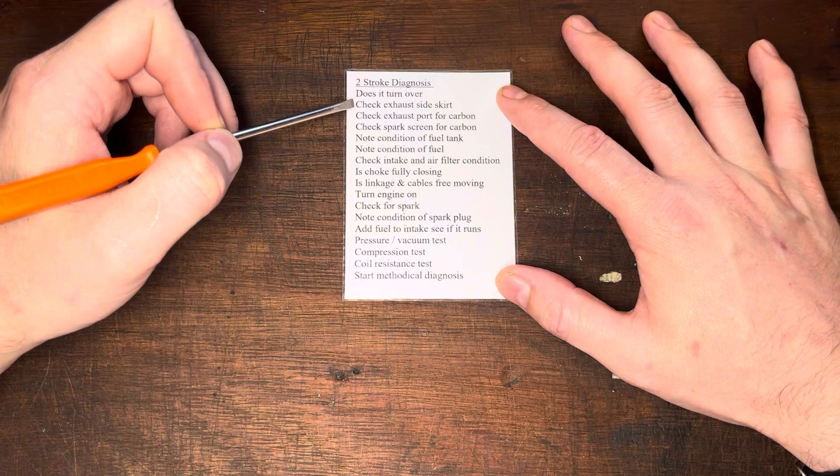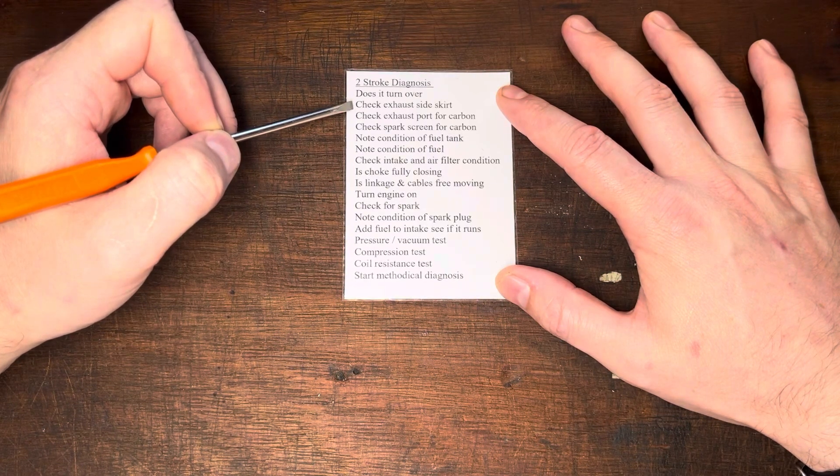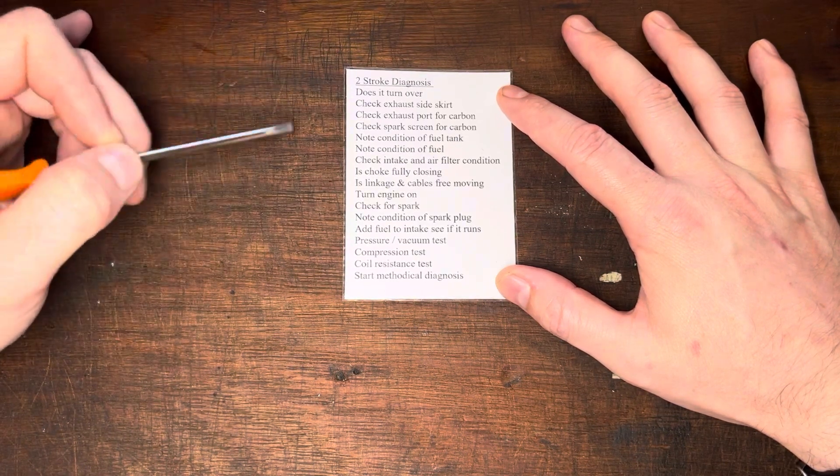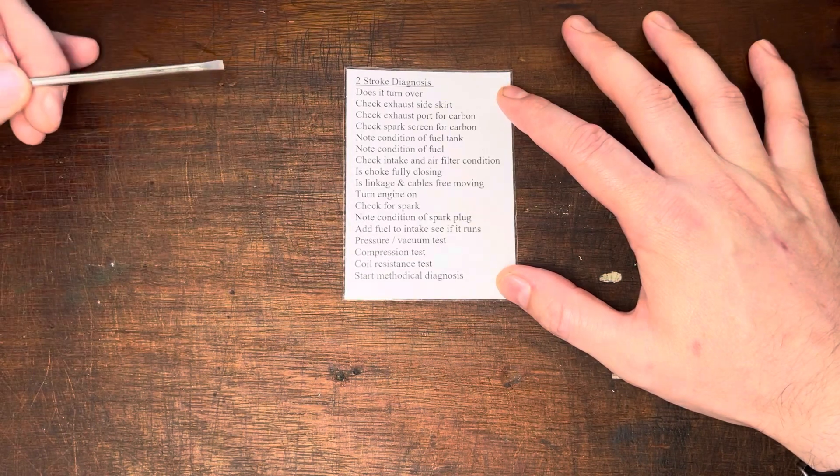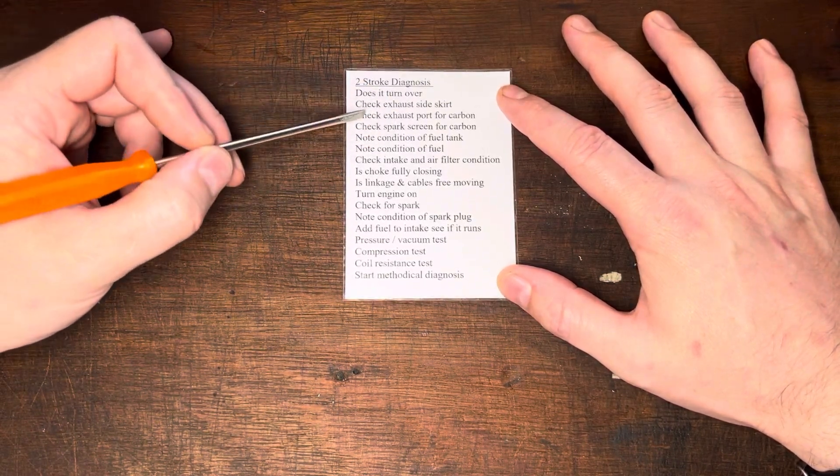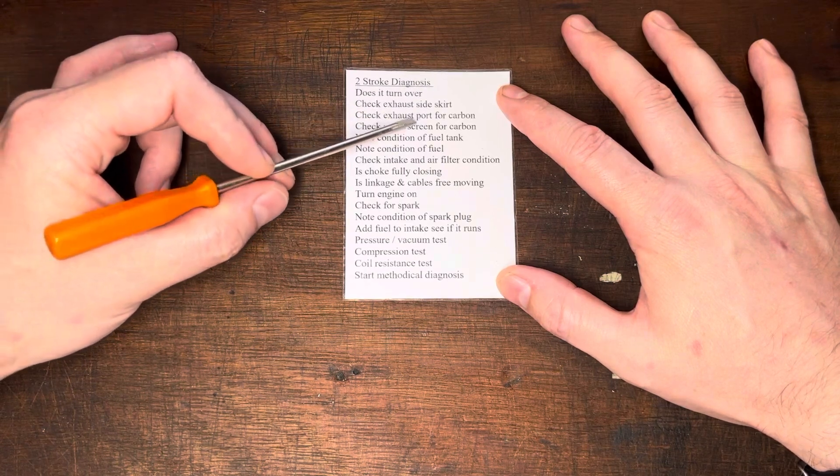Checking the exhaust side skirt, pop the muffler off, have a look through the exhaust port. You want to see the skirt and you want to make sure there's no vertical scoring, make sure there's no transfer, make sure there's no damage from possible carbon build-up.